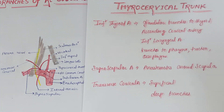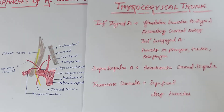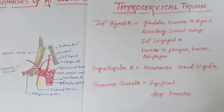The suprascapular artery runs laterally downward, crossing the scalenus anterior and phrenic nerve. It lies behind the internal jugular vein and sternocleidomastoid, then crosses the trunk of the brachial plexus, running in the posterior triangle behind and parallel with the clavicle to reach the superior border of the scapula. It crosses above the suprascapular ligament and takes part in the anastomosis around the scapula, also supplying the clavicle, scapula, shoulder, and acromioclavicular joint.